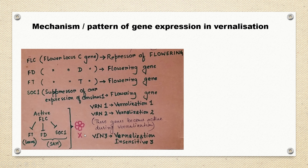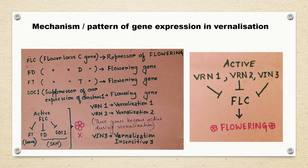Next we come to three more genes: Vrn1, Vrn2, and Vrn3. Vrn1 and Vrn2 are Vernalization 1 and Vernalization 2; these genes become active during vernalization. Vrn3 is vernalization insensitive.